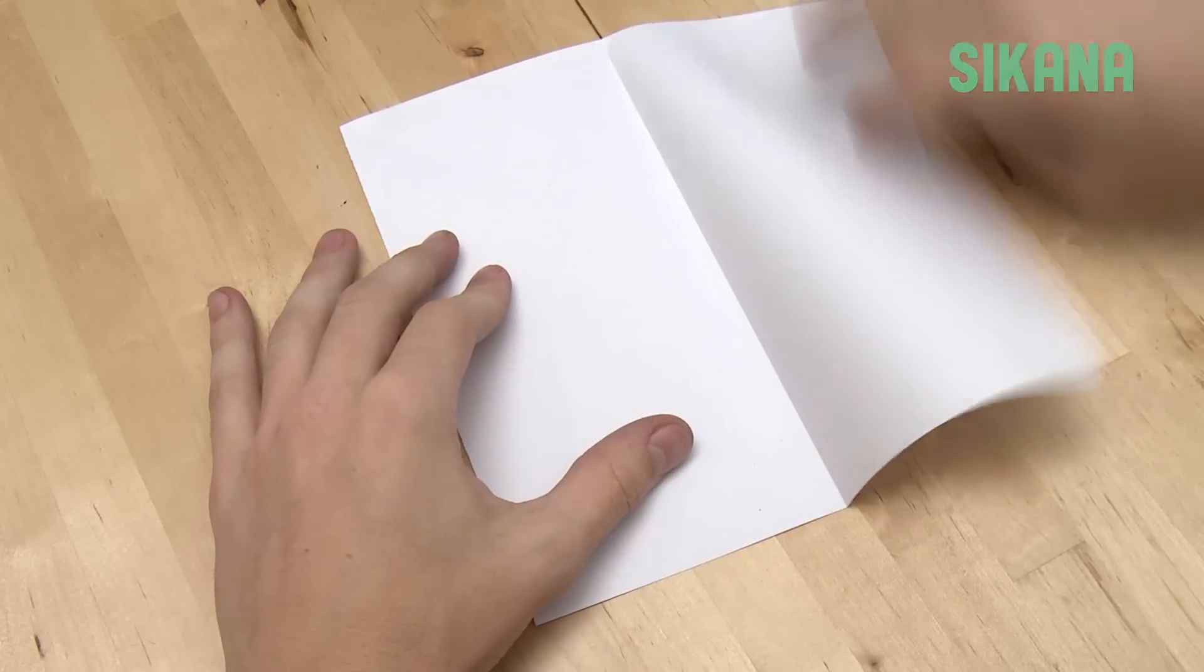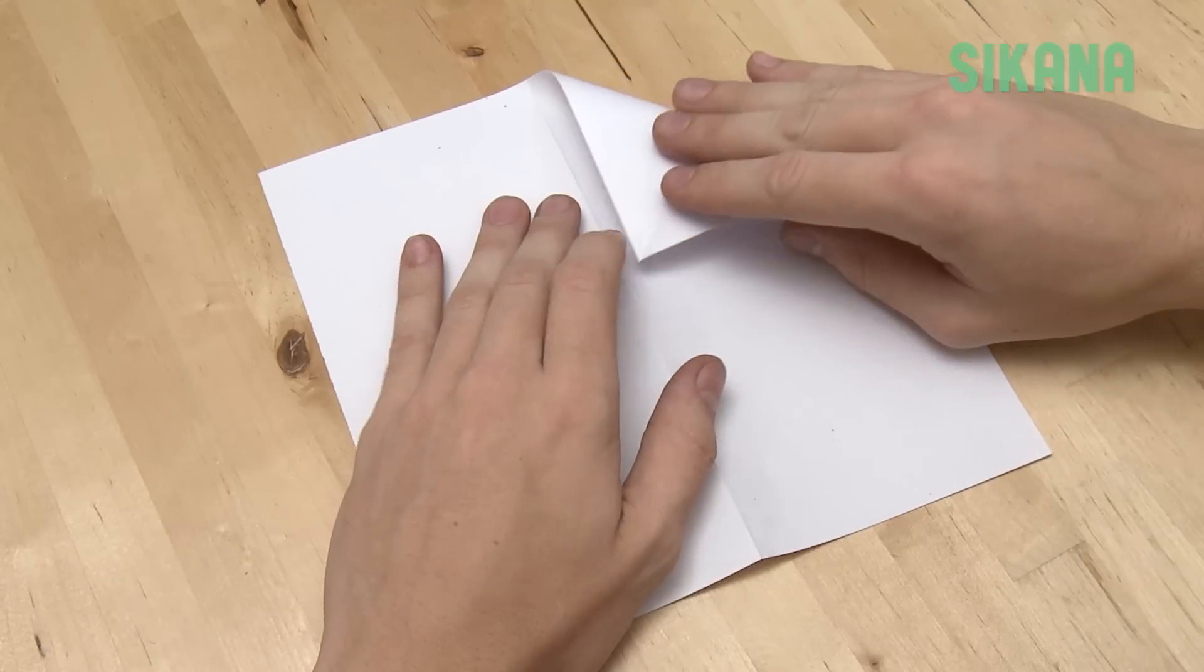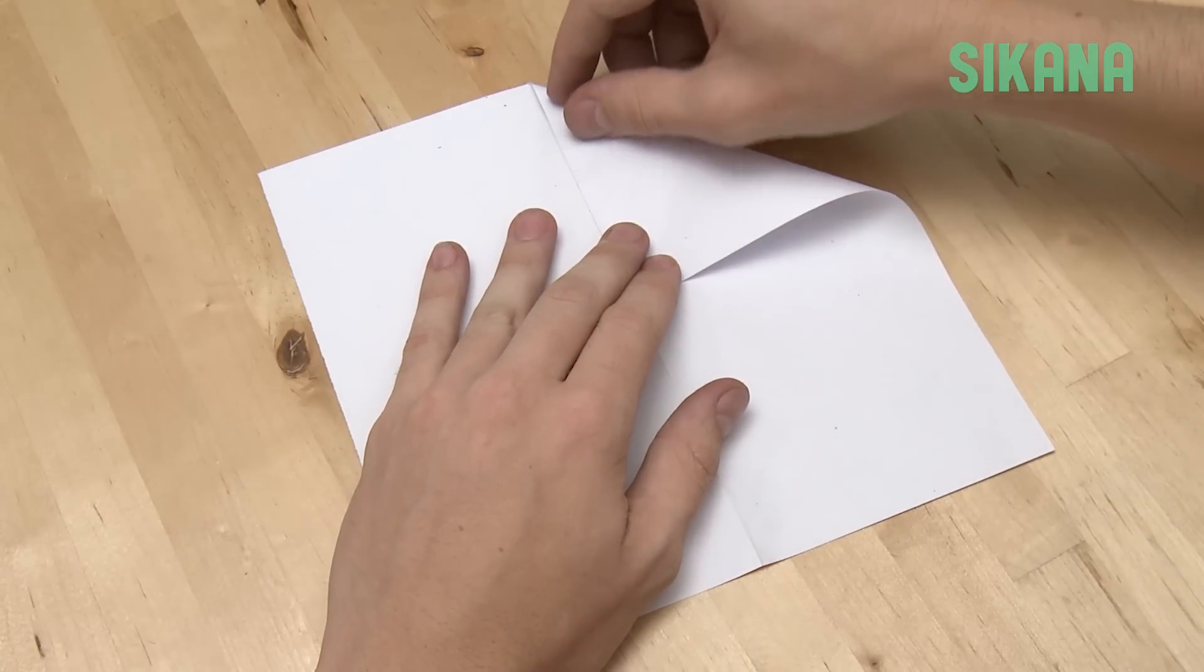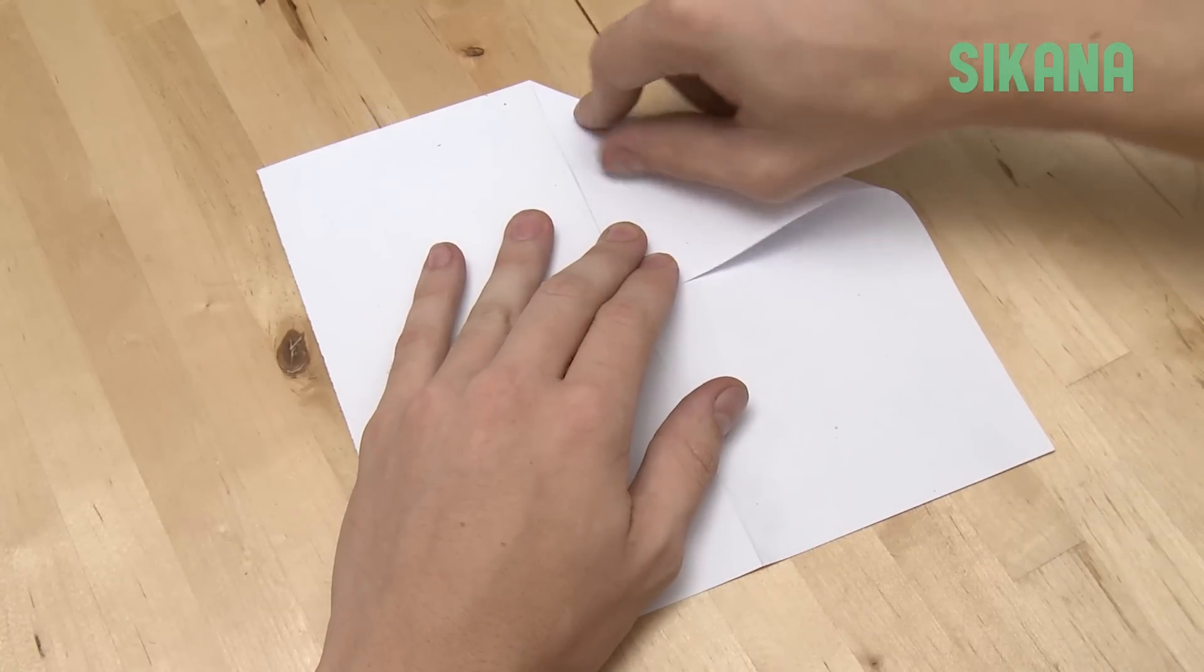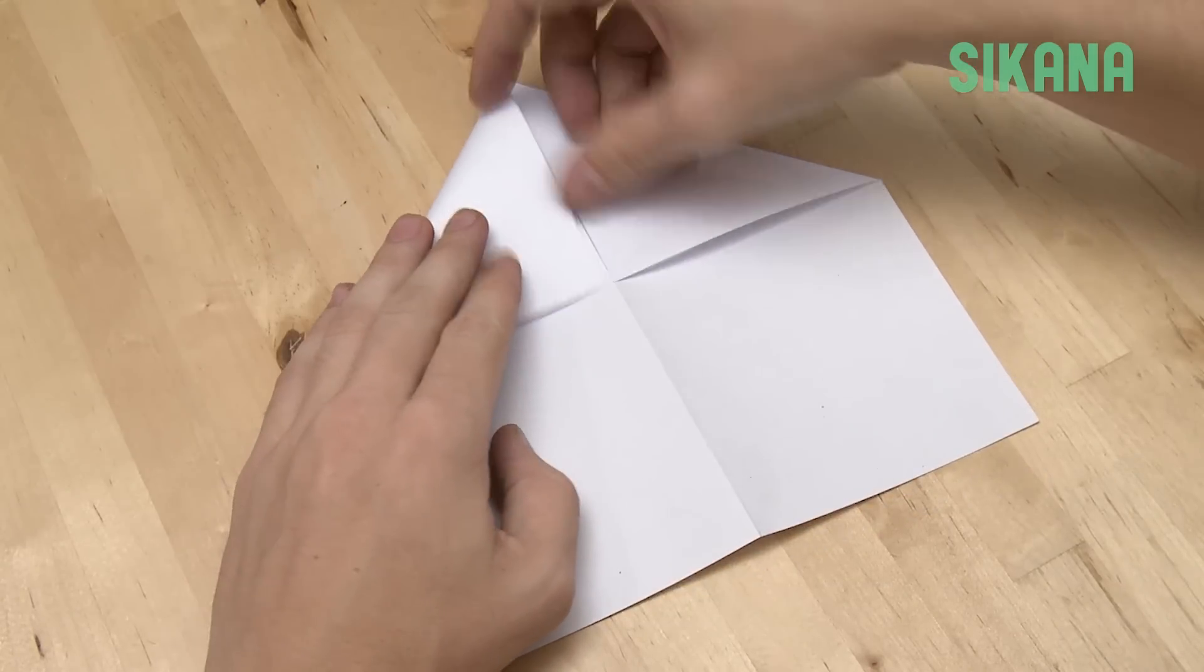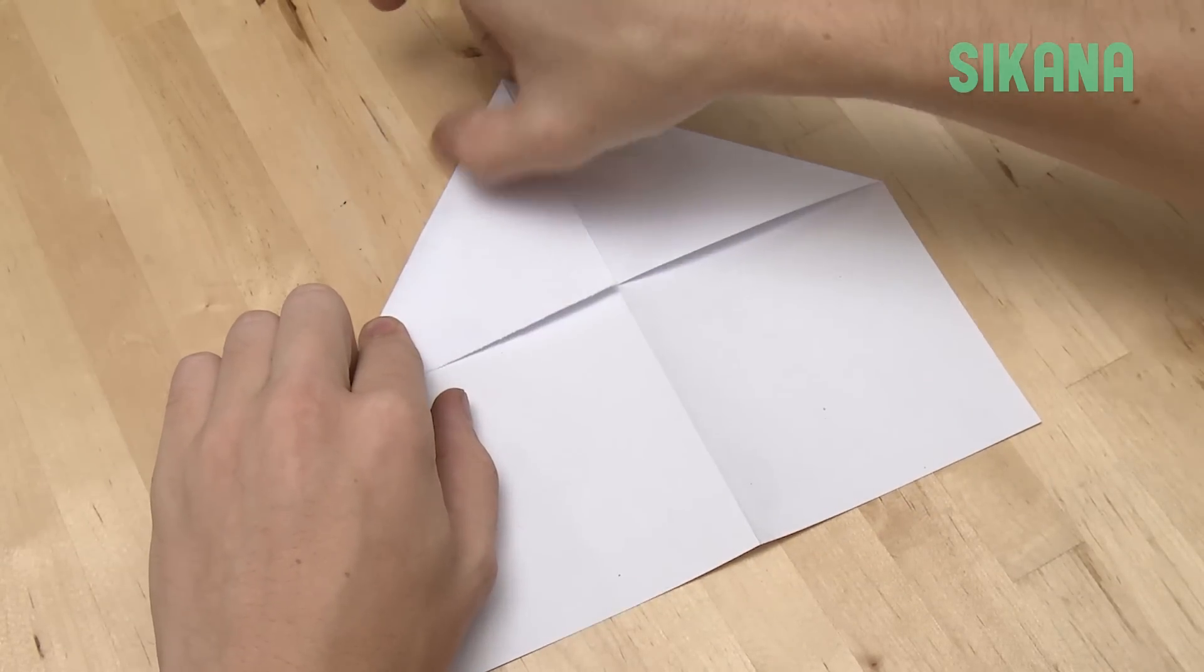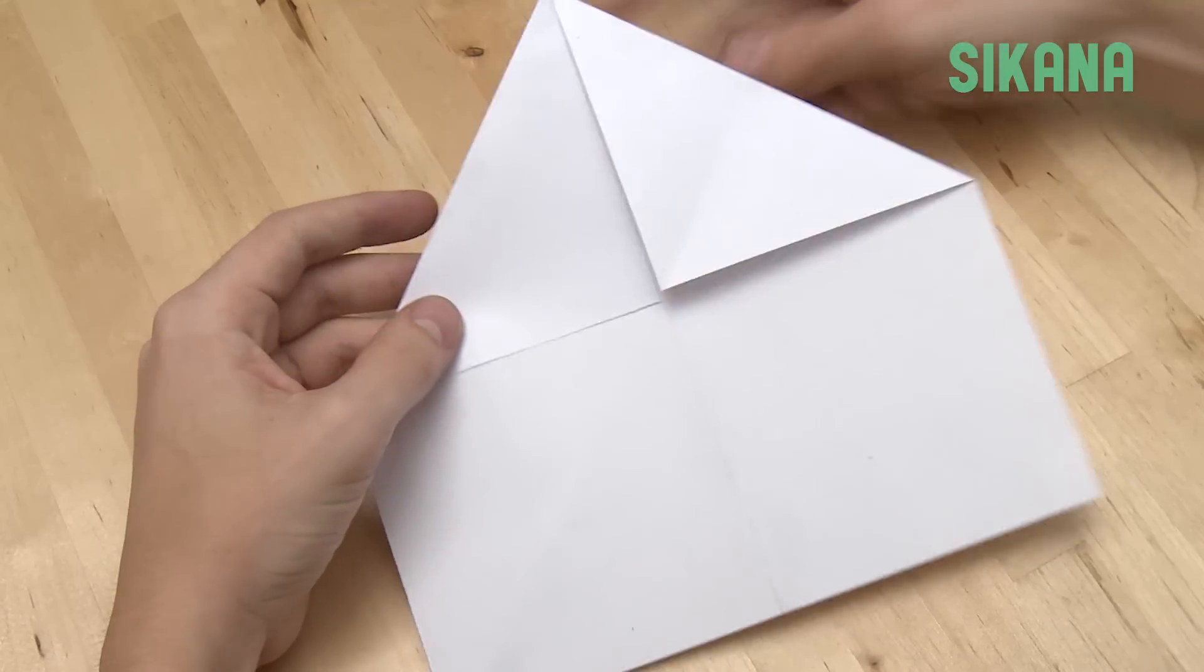Open it. Flip the sheet and fold the end onto the center line like so. Repeat for the other side. Flip the sheet.